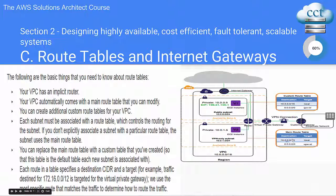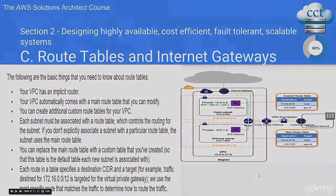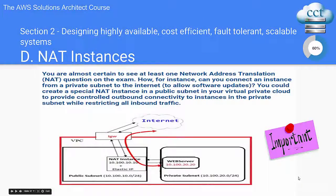If you don't explicitly associate a subnet with a particular route table, the subnet uses the main route table. This is a lot to take in, so we'll jump to the next slide. This is an important concept to take from the entire discussion of NAT instances, route tables, and internet gateways.